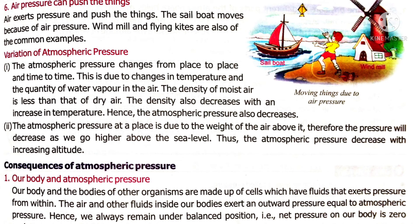This is the reason pressure decreases as we go higher above sea level — the number of gas particles is less at higher altitudes. We can conclude that atmospheric pressure decreases with increasing altitude or increasing height from the Earth's surface. Now let's look at the consequences of atmospheric pressure. The first consequence is our body and atmospheric pressure — our body and the bodies of other organisms are made up of cells which have fluids that exert pressure from within.